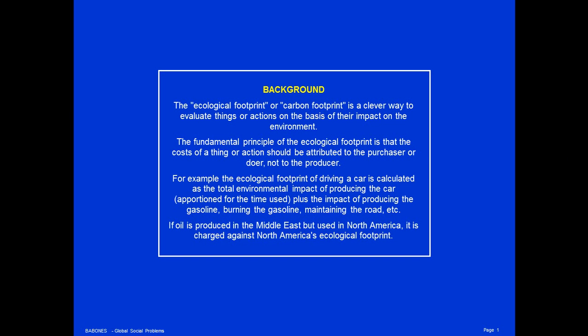The fundamental principle of the ecological footprint is that the cost of a thing or action should be attributed to the purchaser or doer, not to the producer. For example, the ecological impact of driving a car is calculated as the total environmental impact of producing the car, plus the impact of producing the gasoline, burning the gasoline, maintaining the road you drive on, etc. If oil is produced in the Middle East but used in North America, it is charged against North America's ecological footprint because that is where the product is consumed.